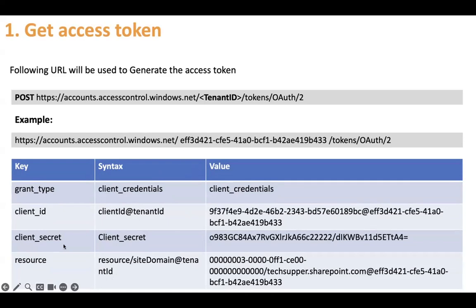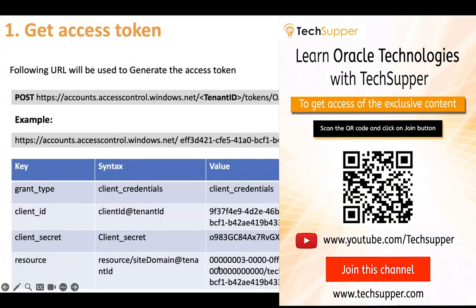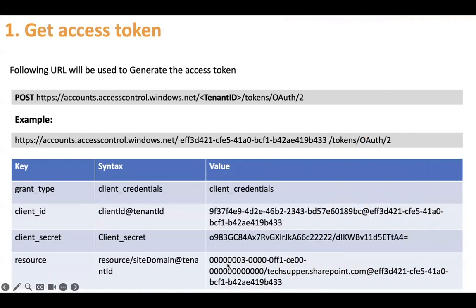Client secret would be the secret that you generate. Resource is another parameter you have to pass, which will be the combination of three things: resourceID/siteDomain@tenantID. So resource ID starts from 00. We'll show how to generate the resource ID — slash that site domain, which is taxsupport.sharepoint.com in this case, at the rate tenant ID.